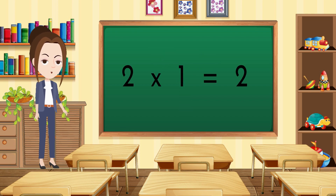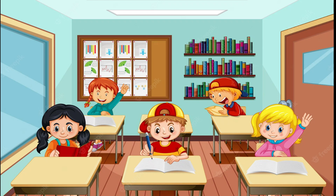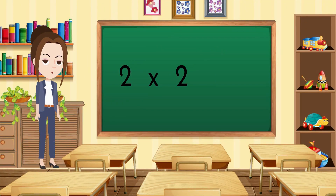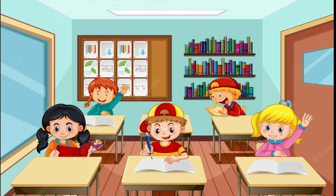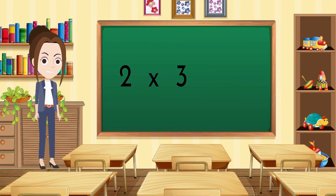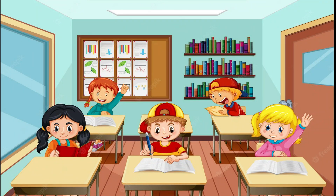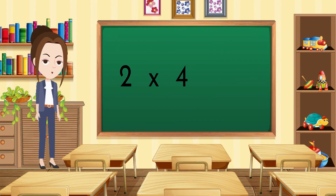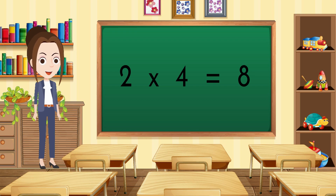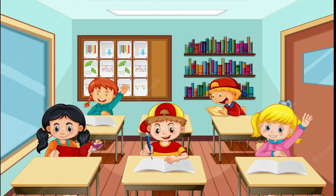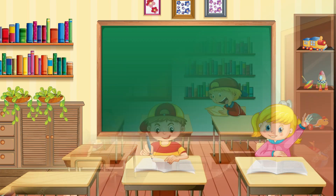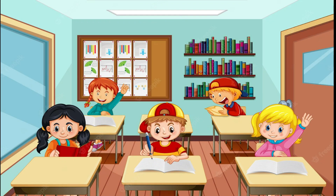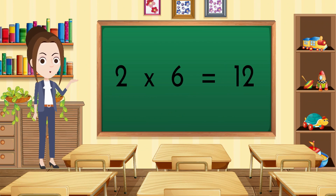Two ones are two. Two twos are four. Two threes are six. Two fours are eight. Two fives are ten. Two sixes are twelve.